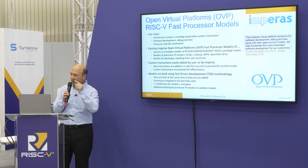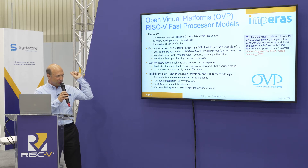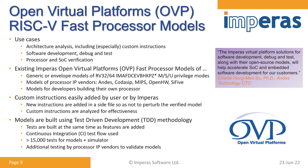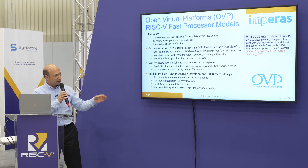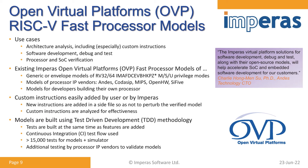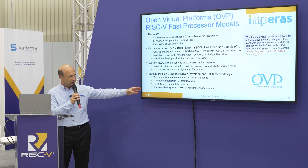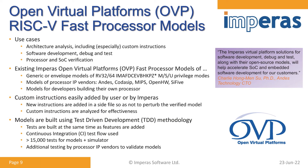We support open hardware as well, along with SiFive, Codasip, and Andes. We also enable people building their own RISC-V processor to develop their own processor model. Custom instructions are easily added by the user or by Empiris in a side file, so they don't perturb the base processor model. The models are built using a test-driven development methodology, and we use a continuous integration test flow with 15,000 to 20,000 tests run every time developers check in code. Additional testing is done by processor IP vendors before they certify us as a reference model.